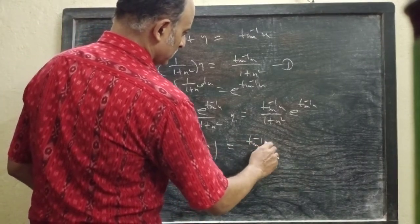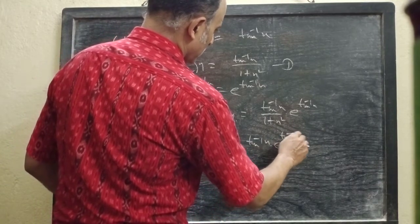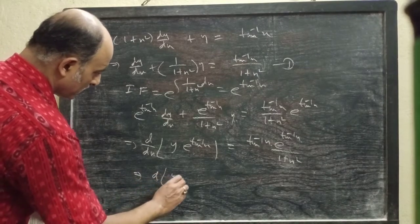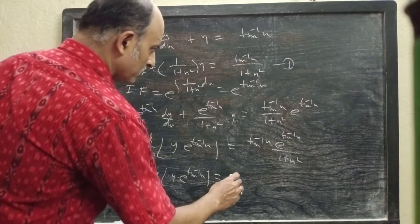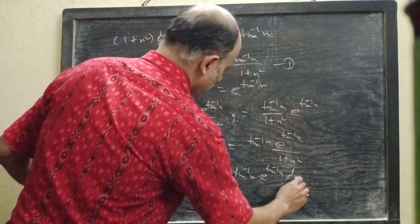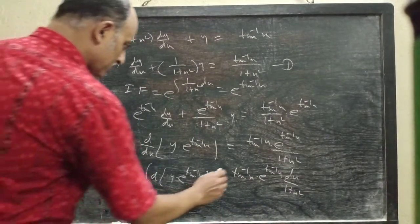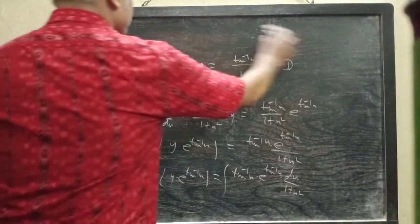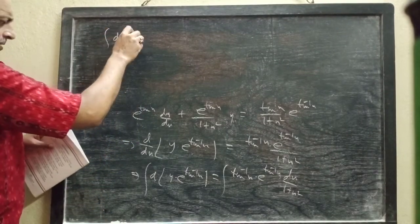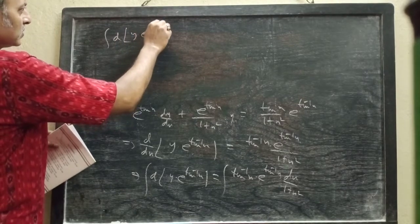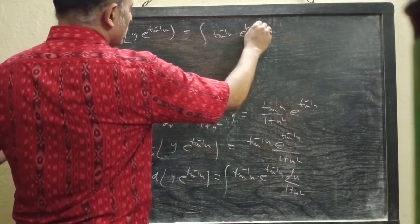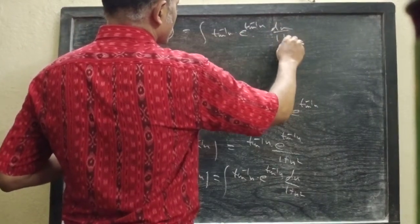The right side is tan⁻¹x × e^(tan⁻¹x) / (1 + x²). So the next step gives y × e^(tan⁻¹x) = integral of tan⁻¹x × e^(tan⁻¹x) / (1 + x²) dx.